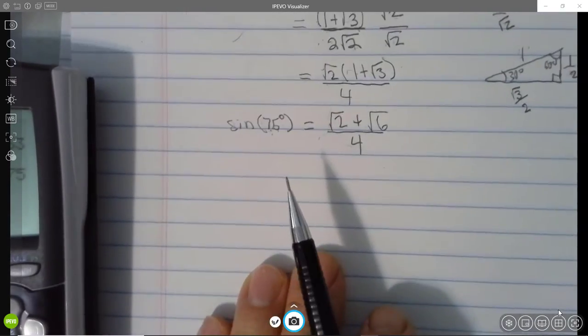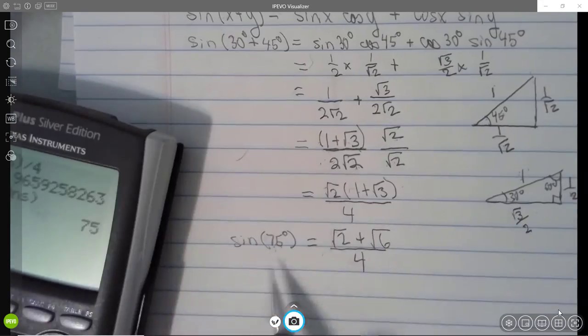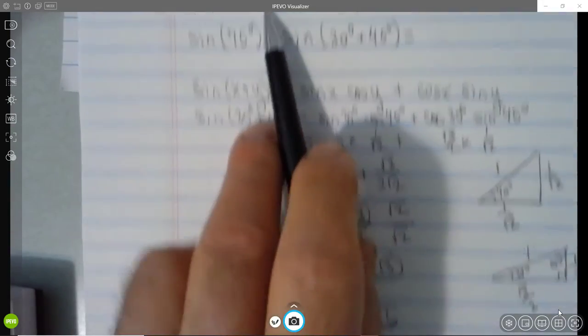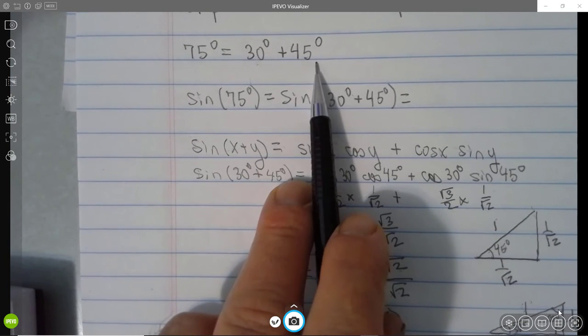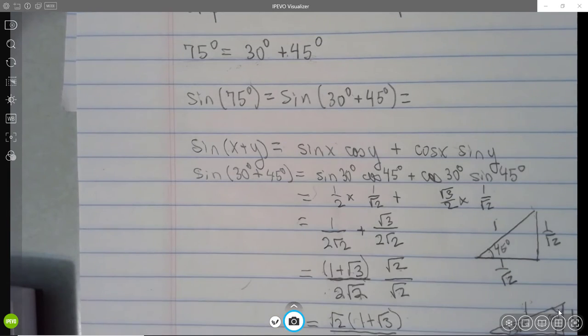So that's how you find the exact value of any angle where you can easily break this down to a sum or difference of angles for which you know trig functions exactly.